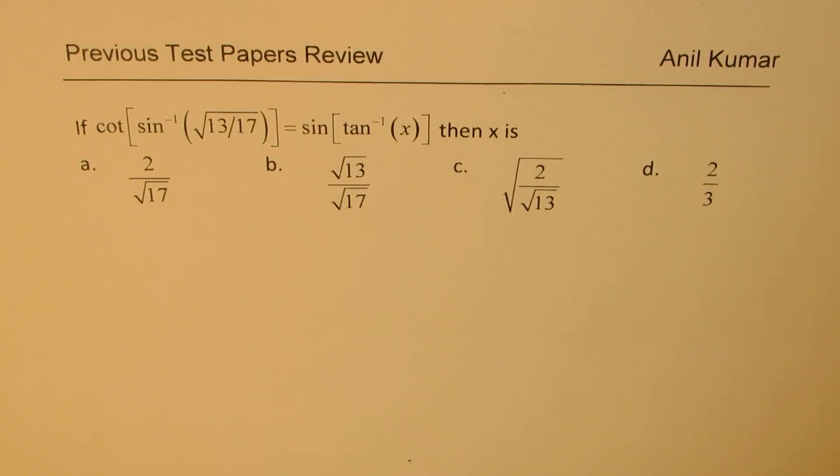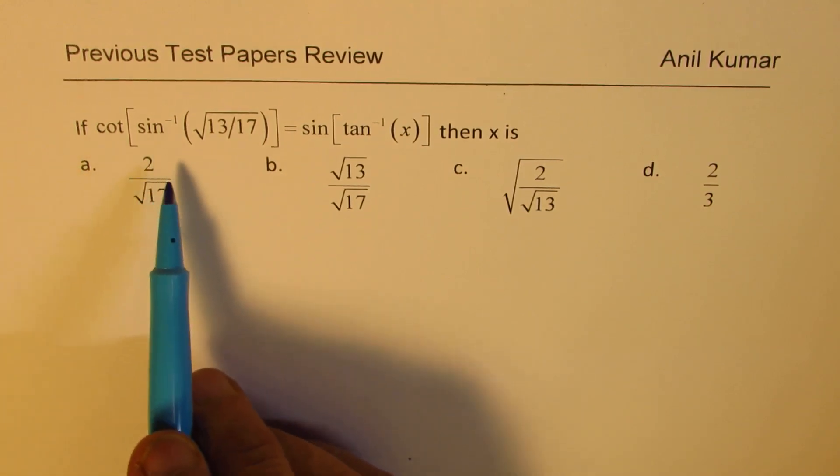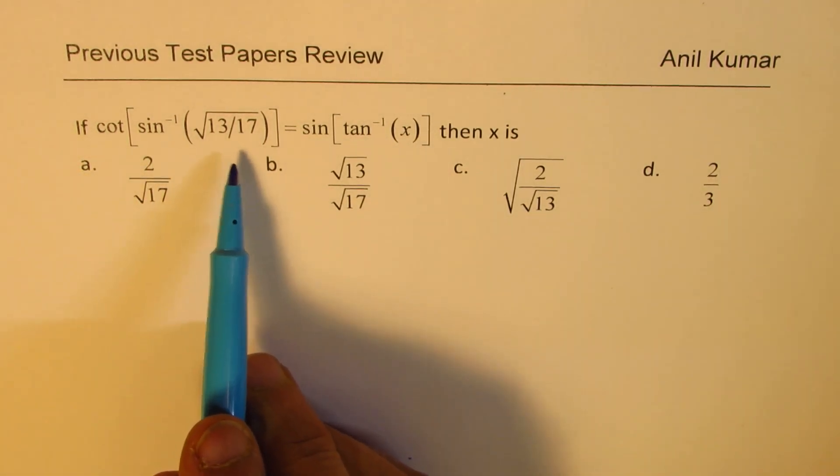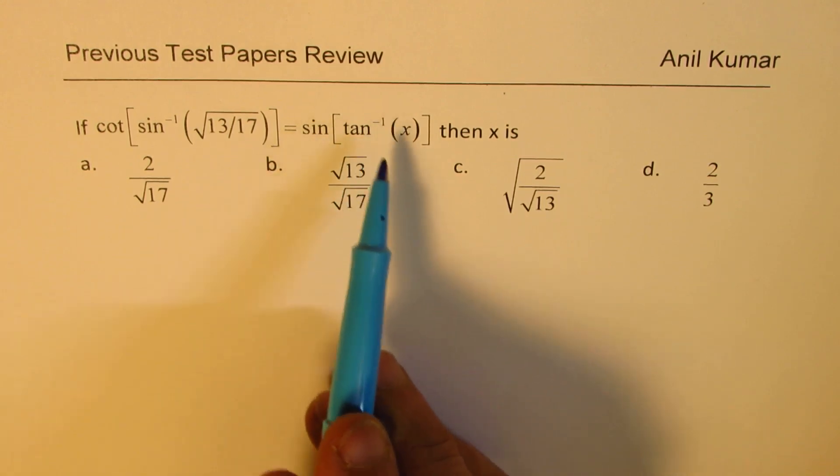I'm Anil Kumar, welcome to our series on previous test papers review. Here is another question based on trigonometric inverse functions: if cot of sine inverse square root of 13 over 17 is equal to sine of tan inverse x, then x is what? Four choices are given to you.